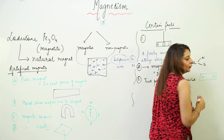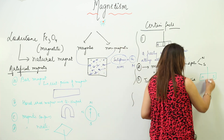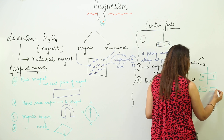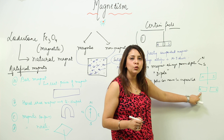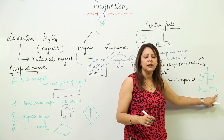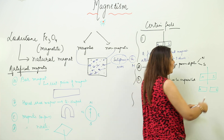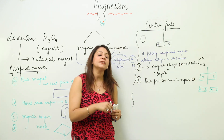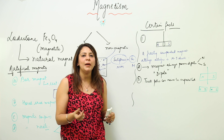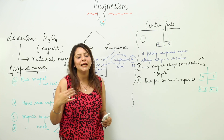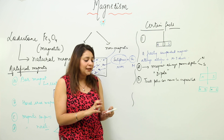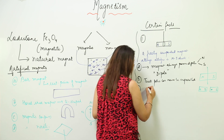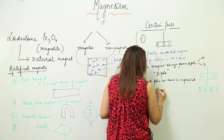To understand why two poles can never be separated: suppose you have a magnet with north and south poles and you cut it in the middle. You might think you'd get one piece with only a north pole and one with only a south pole — but that is not the case. The point from where you cut automatically develops the missing pole. Even in a very minute piece of magnet, there exists both a north pole and a south pole.